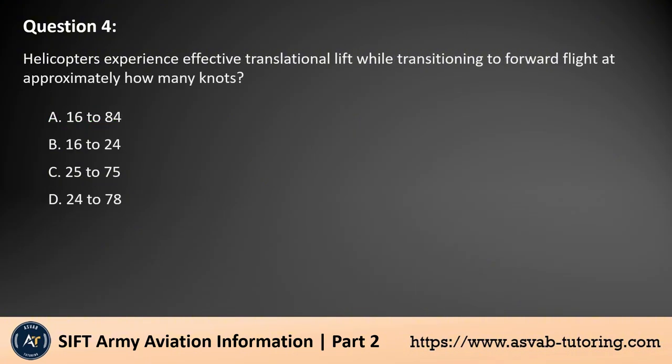Question 4. Helicopters experience effective translational lift while transitioning to forward flight at approximately how many knots? A. 16–84. B. 16–24. C. 25–75. D. 24–78. The answer is B. Helicopters experience effective translational lift (ETL) during the transition to forward flight at approximately 16–24 knots. ETL occurs when the rotor system moves into undisturbed air, increasing lift and efficiency. At this speed range, the rotor blades are less affected by the rotor's downwash, allowing for smoother and more efficient lift production during forward flight.